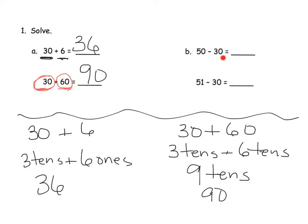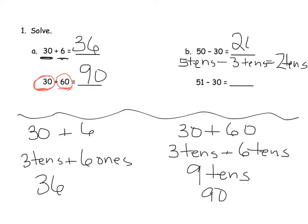Letter B: fifty minus thirty. We have five tens minus three tens. Five tens minus three tens equals two tens, and two tens is written as twenty.